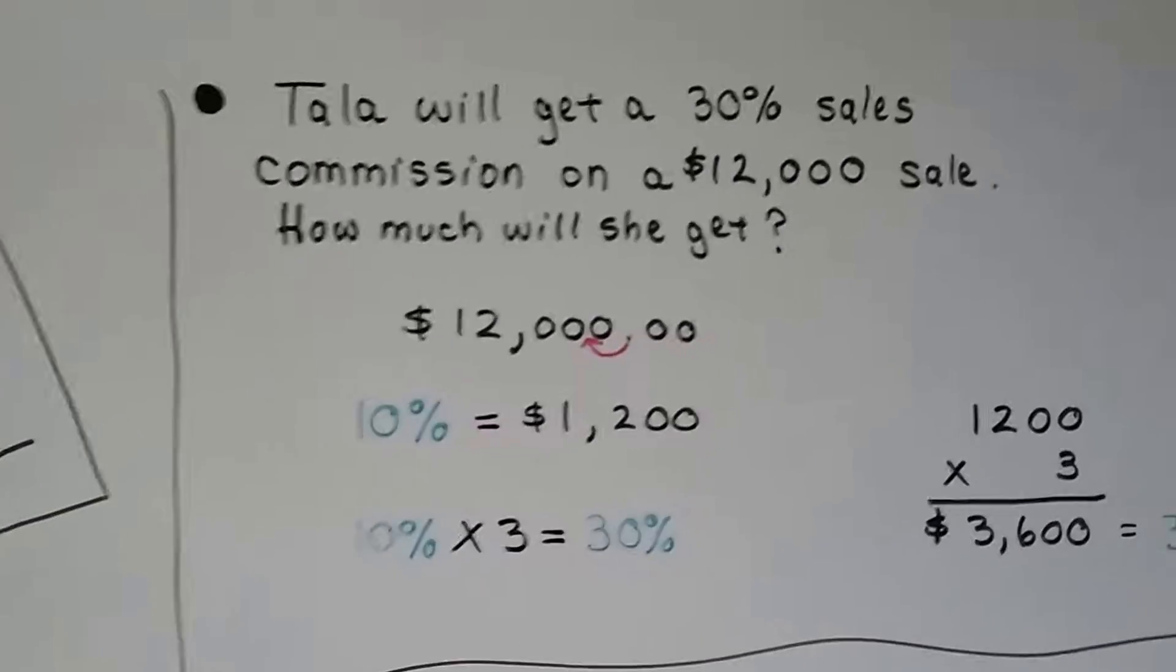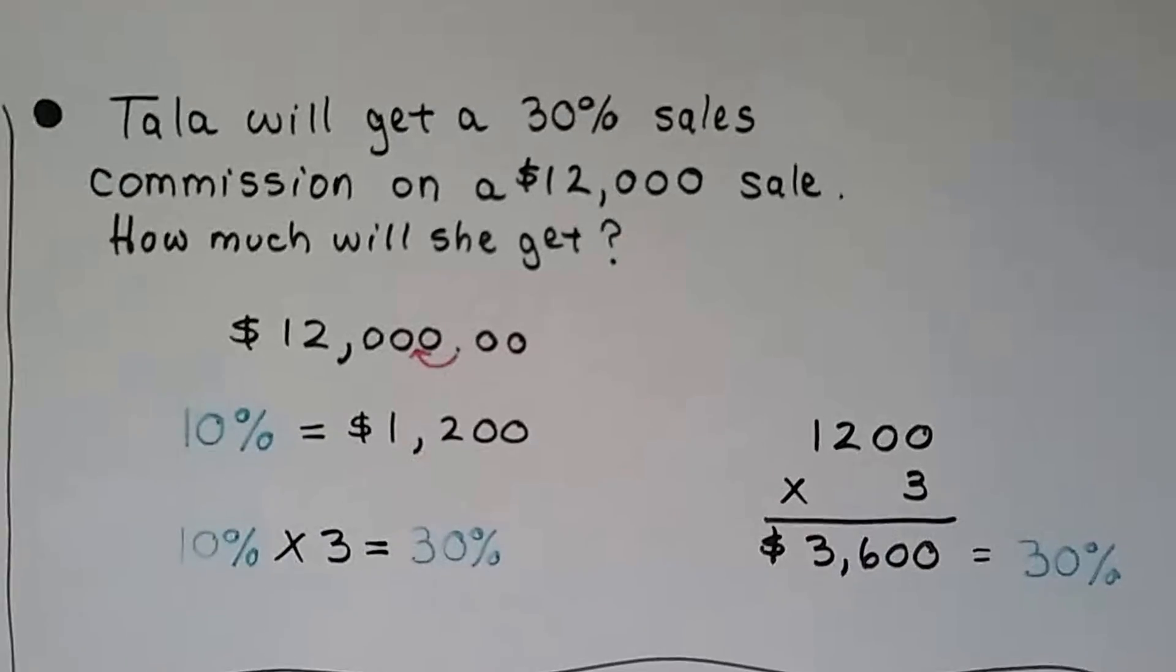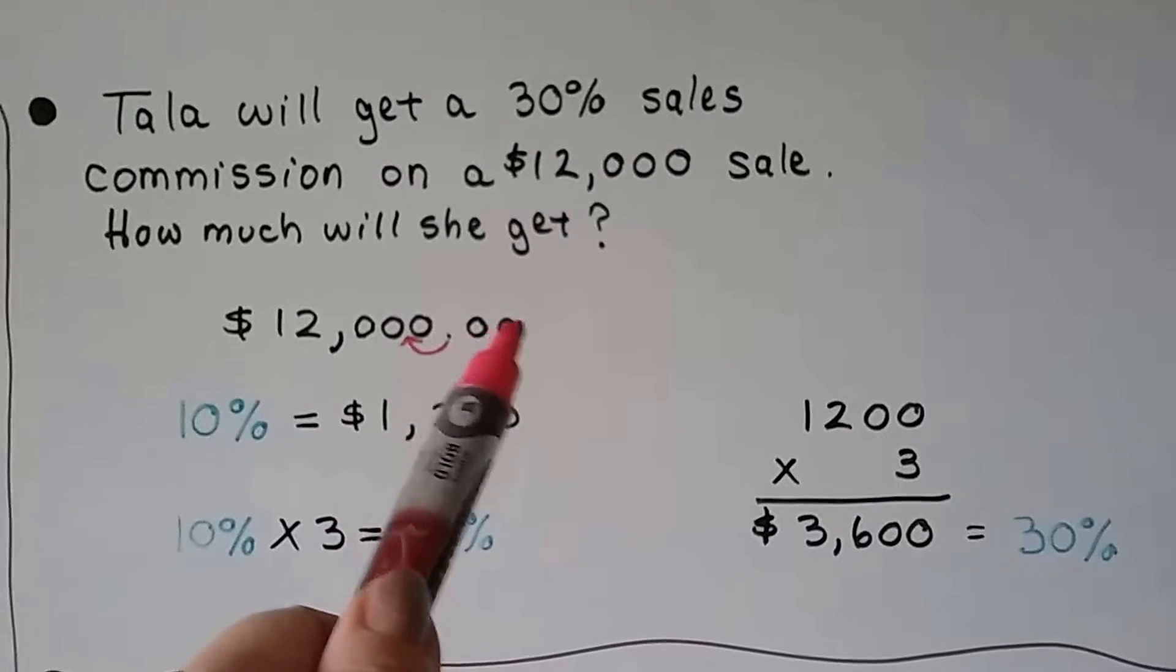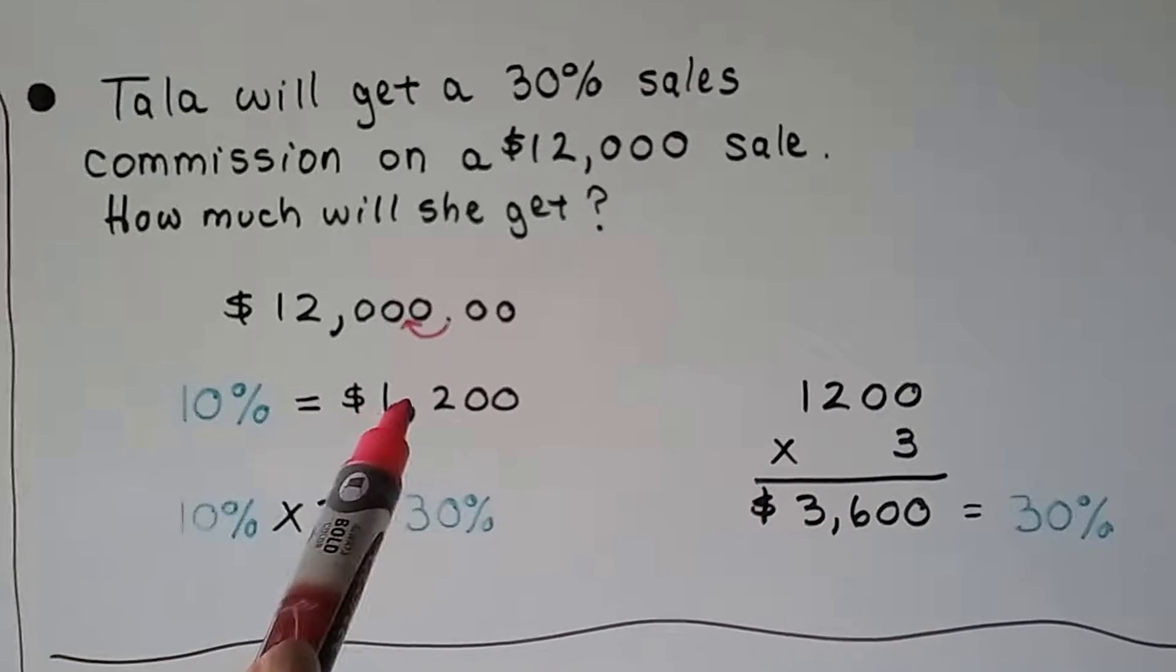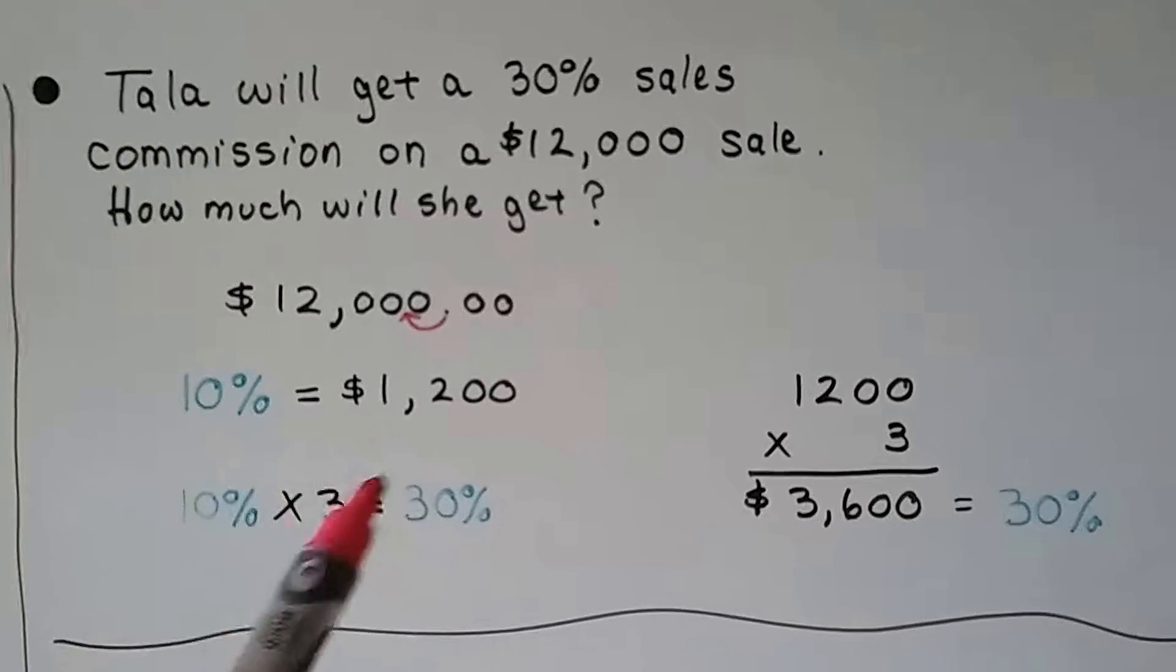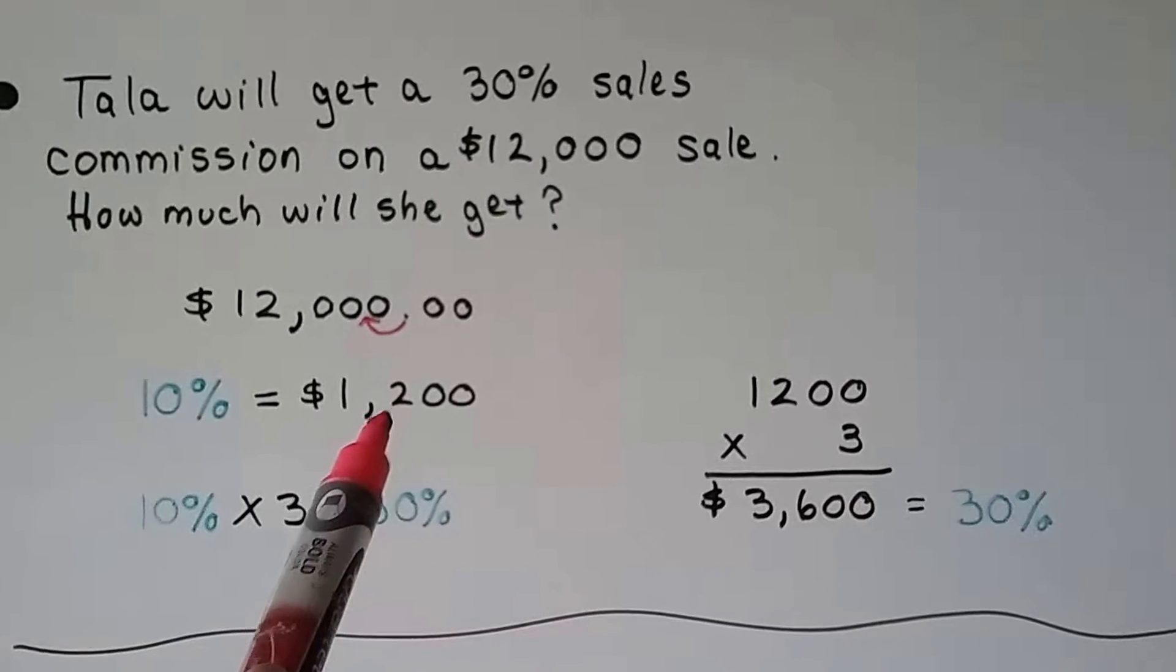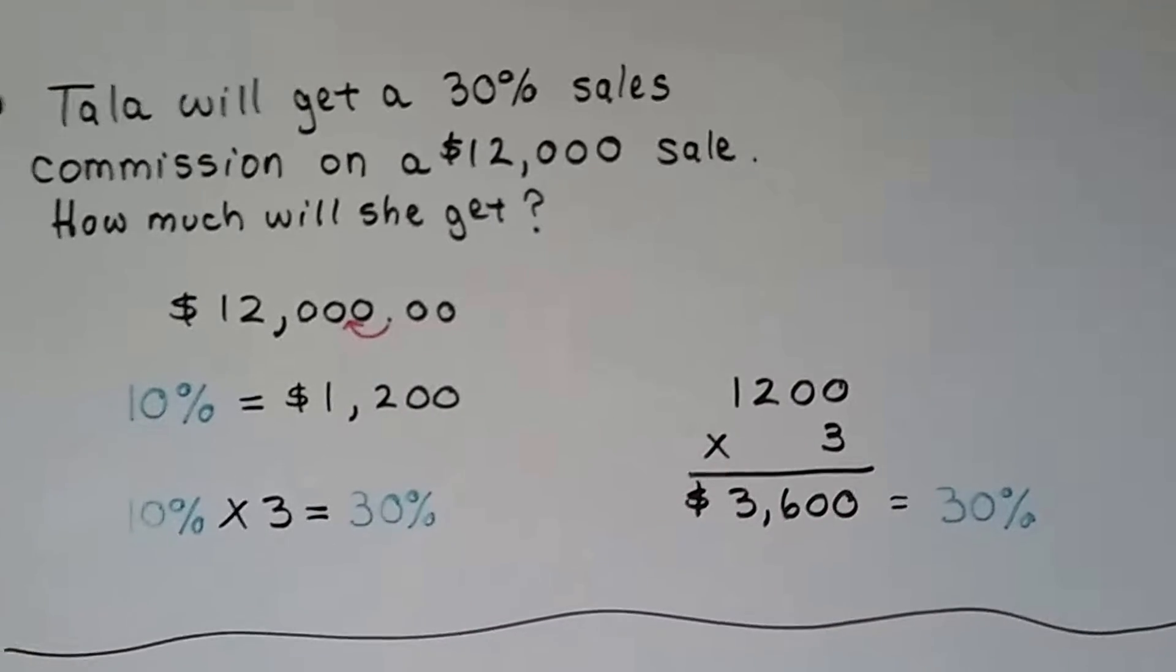Let's look at this one. Tala will get a thirty percent sales commission on a $12,000 sale. How much will she get? Well, we've got $12,000 with a decimal point here and then the cents. So we move the decimal point one hop. So ten percent is going to be $1,200. But she's getting a thirty percent commission, so we need to multiply it by three. Ten percent times three would be thirty percent. So this $1,200 times three would be $3,600 as her thirty percent commission.